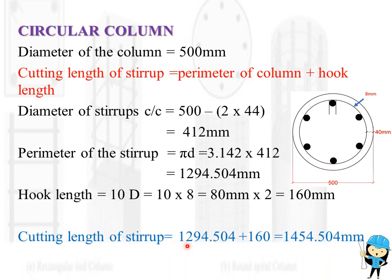Cutting length of stirrup is equal to 1294.504, that is the perimeter of the stirrup, plus 160 mm, which is hook length, which will be 1454.504 mm, or 1.45 meter.